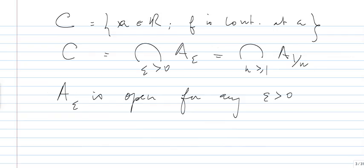So how do we prove that A_epsilon is an open set? Of course, I forgot to mention that C may be empty, and if it is empty, it's a G delta, so we don't have to worry about it because it's open. Here, we will assume that C is not empty, and therefore A_epsilon is not empty. So let A belong to A_epsilon.